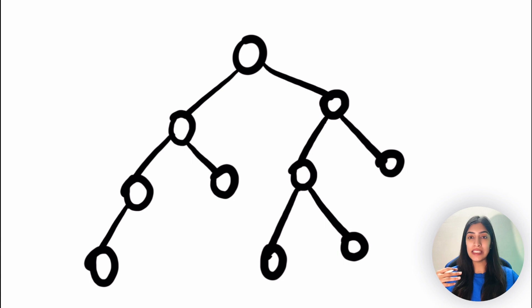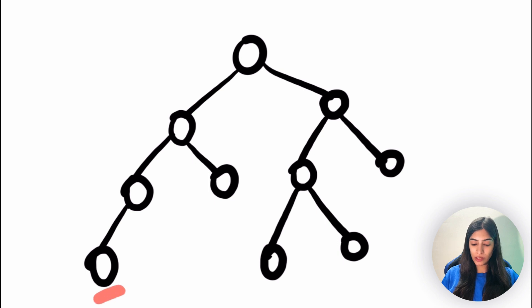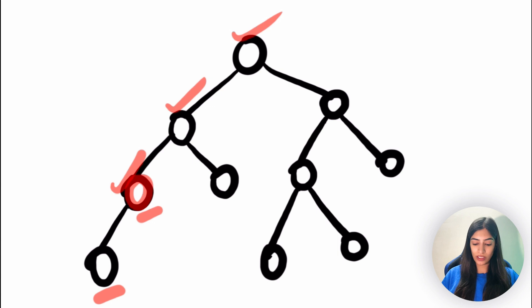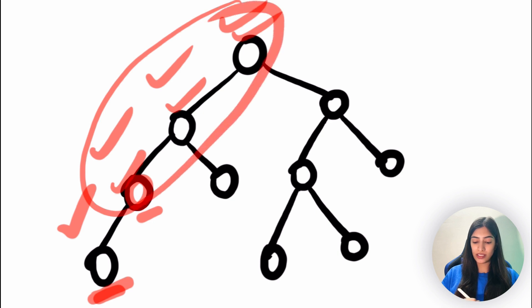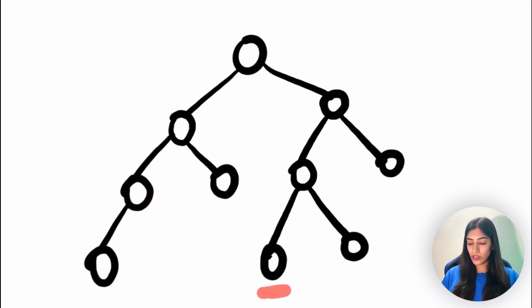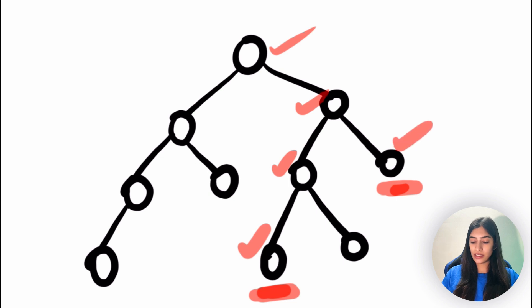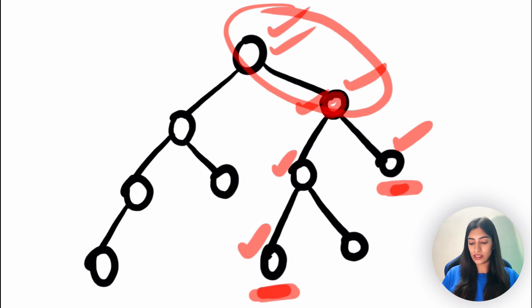Let's go back to the diagram and take more examples. Suppose we are dealing with nodes seven and eight — that's the same first example. The ancestors of the first node are itself, its parent, and grandparent. The ancestors of the second node include itself and several nodes above it. The common ancestors are those three nodes, and the lowest one is the answer.